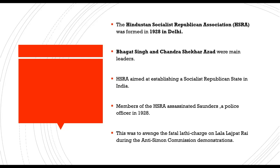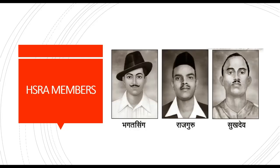This arrest was followed by more arrests of HSRA leaders and all were sentenced to jail. In jail, the activists launched a hunger strike in which Jatin Das, a revolutionary, died on 12 September 1929. Bhagat Singh, Rajguru, and Sukhdev were hanged on 23 March 1931. Chandrasekhar Azad died in an encounter with the police at Allahabad. With the deaths of these activists, the HSRA movement in North India weakened.